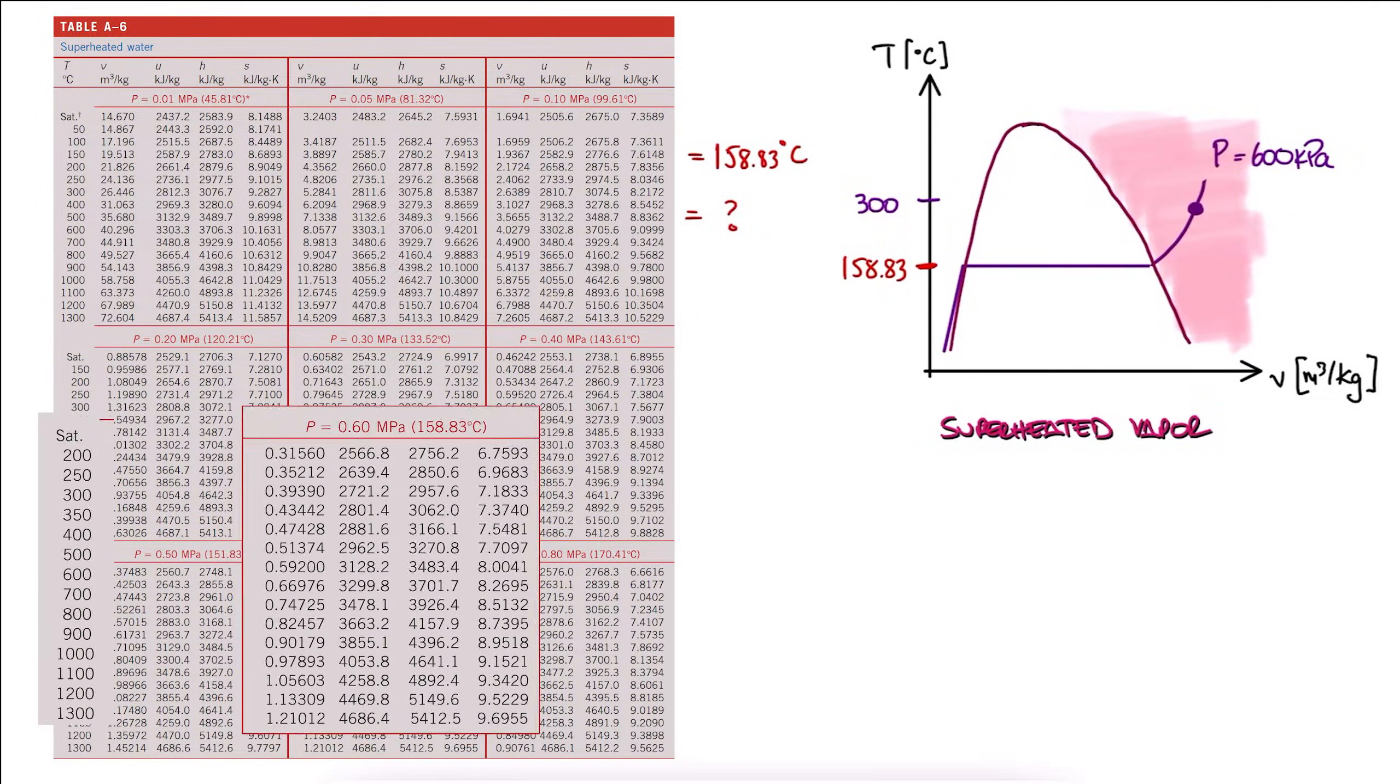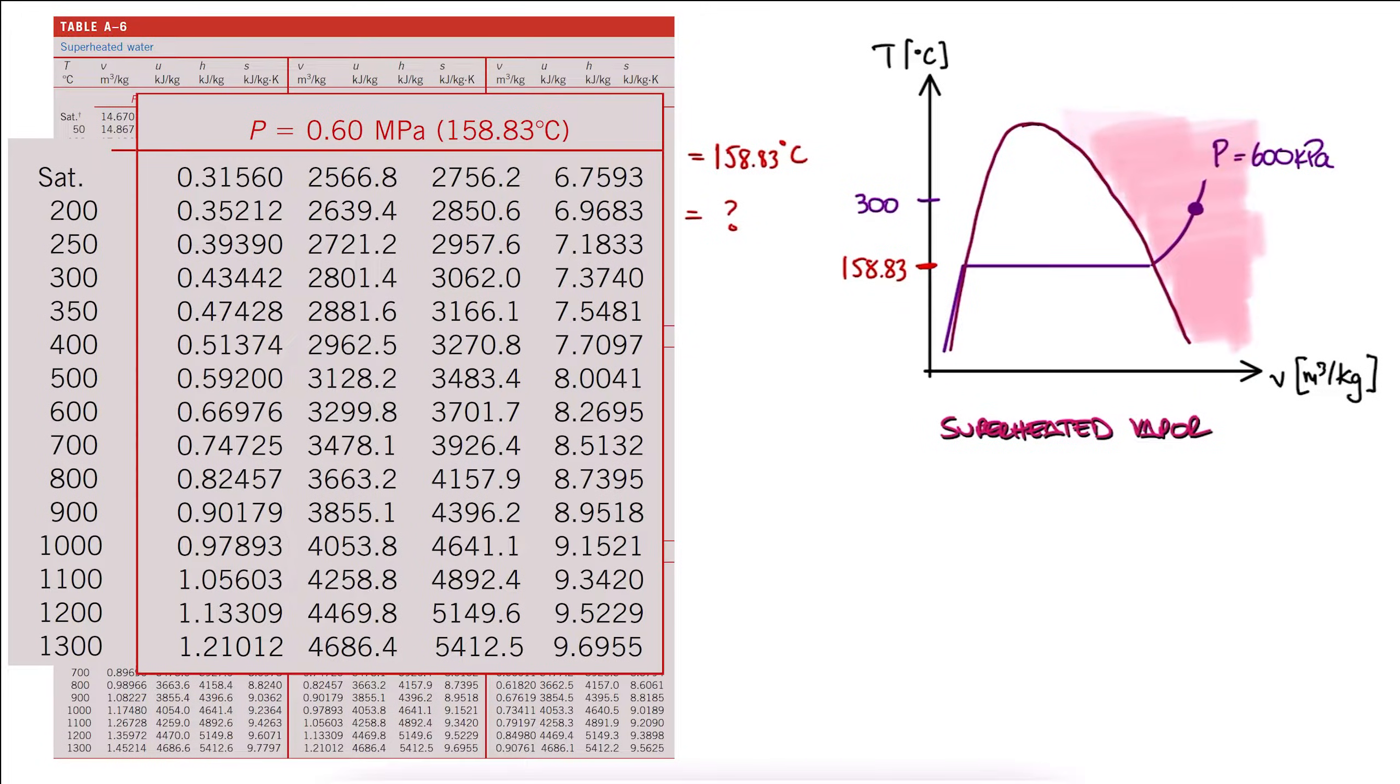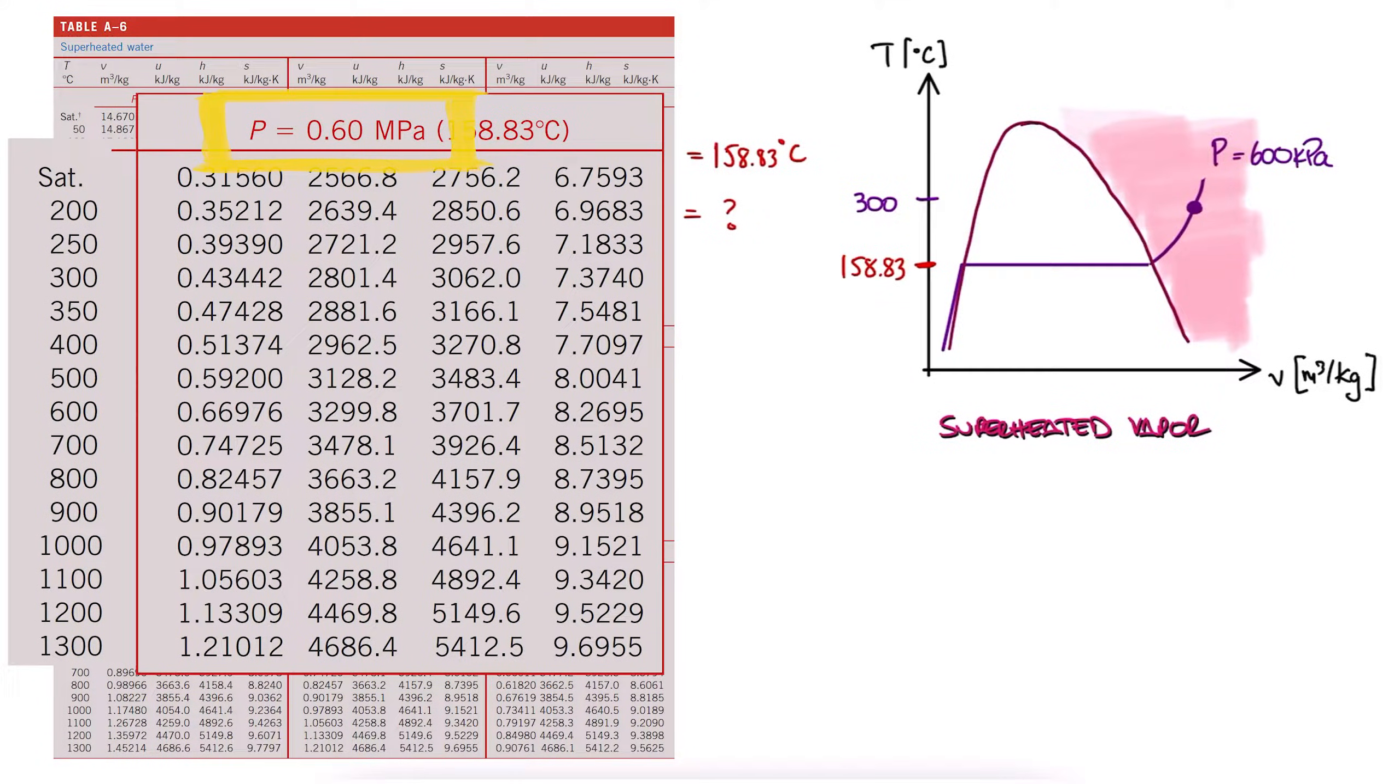We look for the pressure we need, in this case 600 kilopascals, or 0.6 megapascals, and we see that our temperature is listed there. Since what we're looking for is the specific volume, and that's the first column value, we're done. The specific volume for water at 600 kilopascals and 300 degrees Celsius is 0.43442 cubic meters per kilogram.